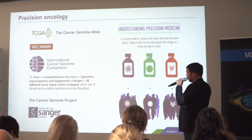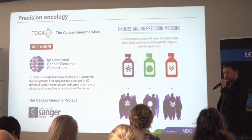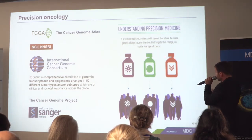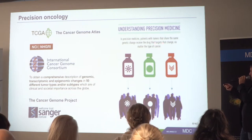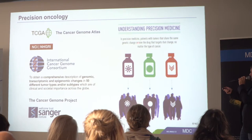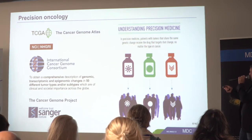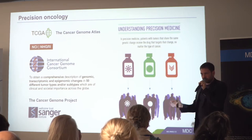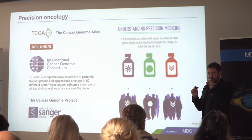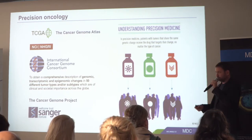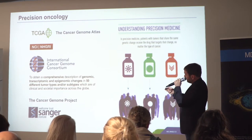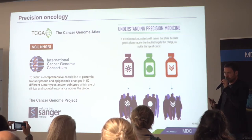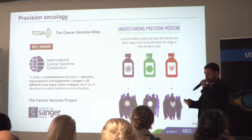I mentioned precision oncology. The bold vision was that we just need to sequence enough tumors to understand heterogeneity and come up with specialized treatments. In precision medicine, patients with tumors sharing the same genetic change receive the drug that targets that change, regardless of cancer type. The idea is to define cancers not by the tissue in which they arise, but by the genetic changes they have, giving us information about how they work and where they might be vulnerable. The main cancer consortia — the Cancer Genome Atlas (TCGA) and the International Cancer Genome Consortium (ICGC) — have sequenced a tremendous number of tumors trying to understand this heterogeneity.